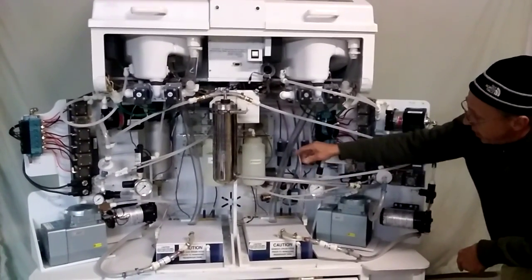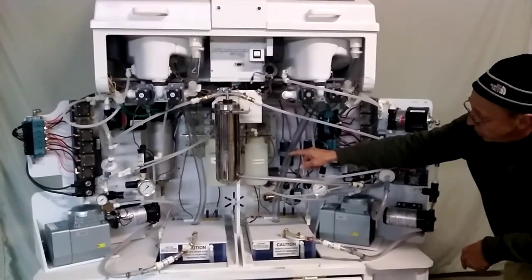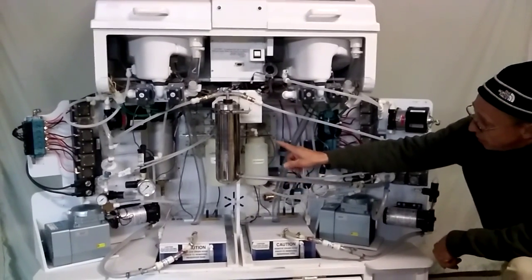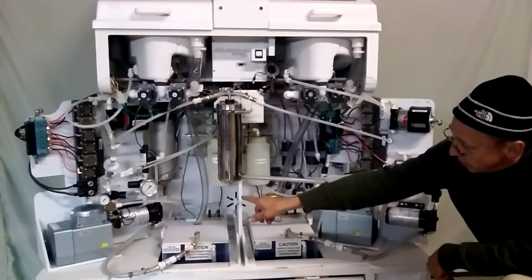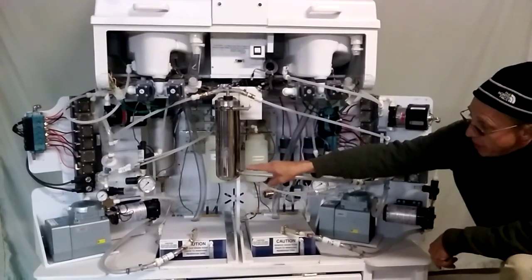You can see all the components for that right there. You have your detergent pumps on the B side here with the detergent bottle. And then on the A side, you have the alcohol bottle, the alcohol pumps. And then right over there, you'll see the air tank as well. And then there's all the components on the A side.